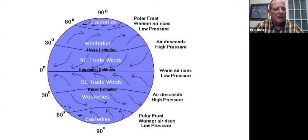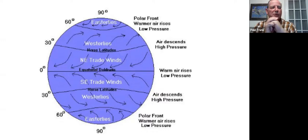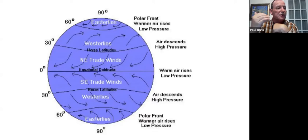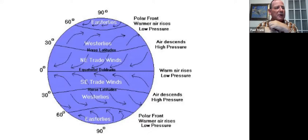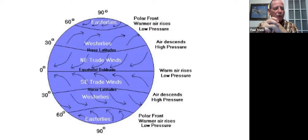It all starts with the sun heating the earth at the equator and causing air in motion. Those are called the horse latitudes — at 30 degrees north and south. The reason they're called the horse latitudes is because when sailors were sailing ships, if they got caught there, there was no wind — the air was just falling to the earth, not moving. Ships would get stuck, they couldn't feed their horses, so the horses got thrown overboard. The equator is called the doldrums because there's no wind there either.